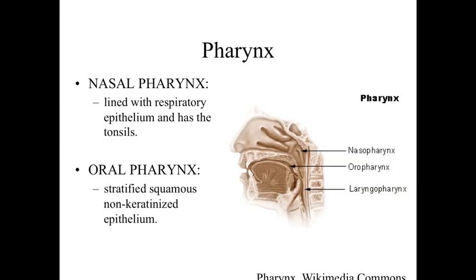Moving back from the nasal cavity into the respiratory passageway, we get to the pharynx. Within the nasopharynx — the back of the nasal cavity — it's lined by the respiratory epithelium: pseudo-stratified columnar epithelia with goblet cells, and this is a location where tonsils begin to appear. The oropharynx, the back of the oral cavity, is essentially going to be a stratified squamous, non-keratinized or minimally keratinized epithelium.